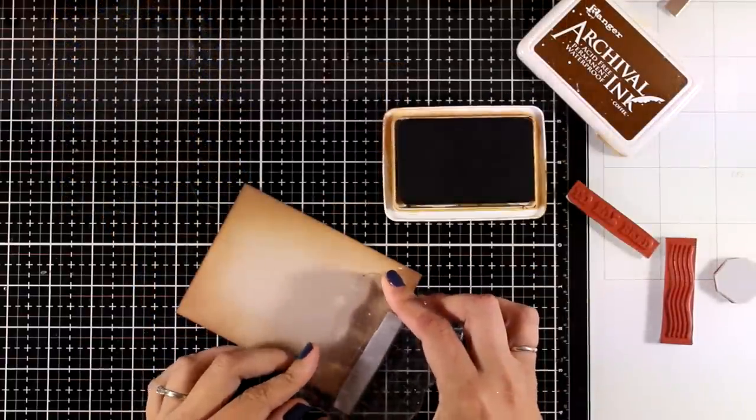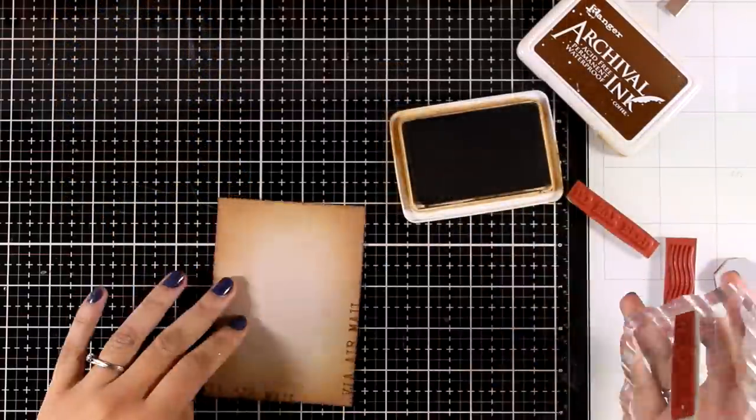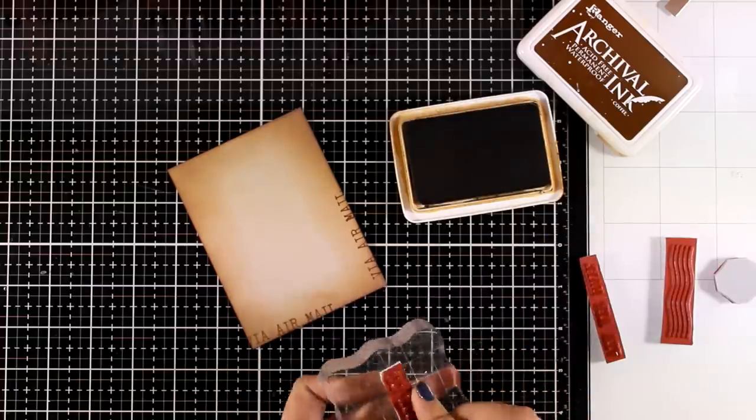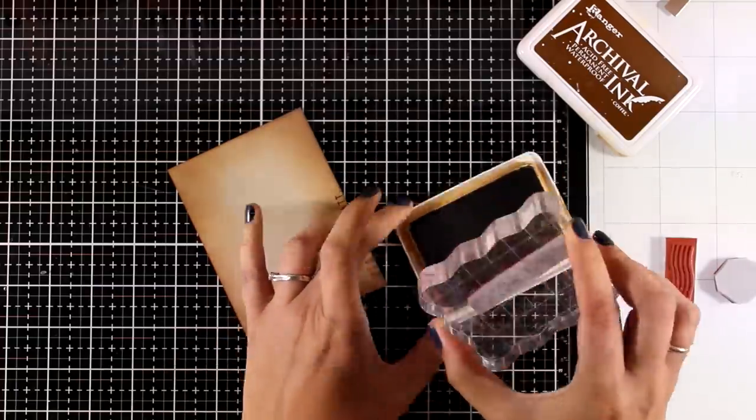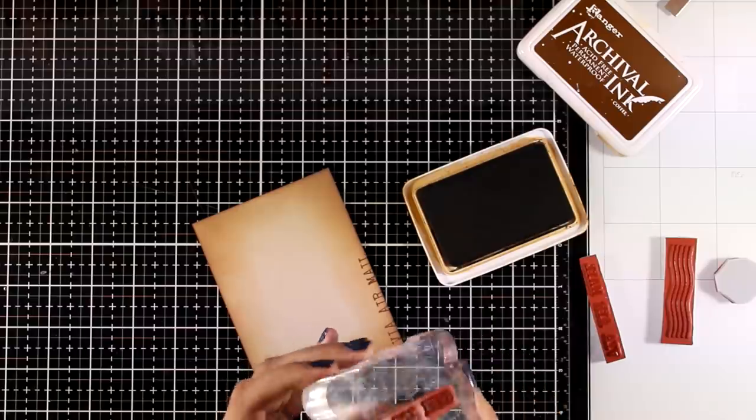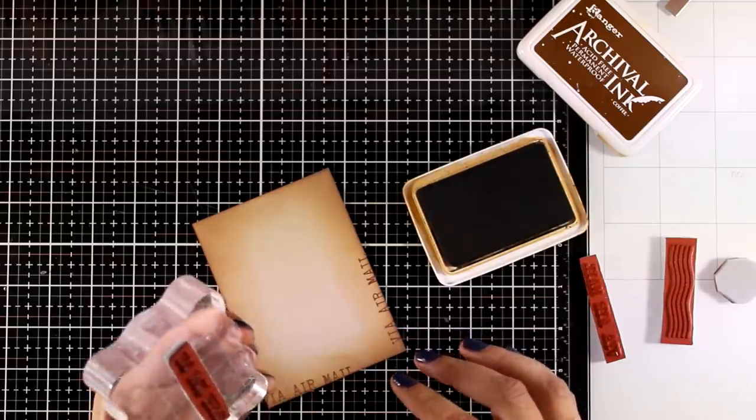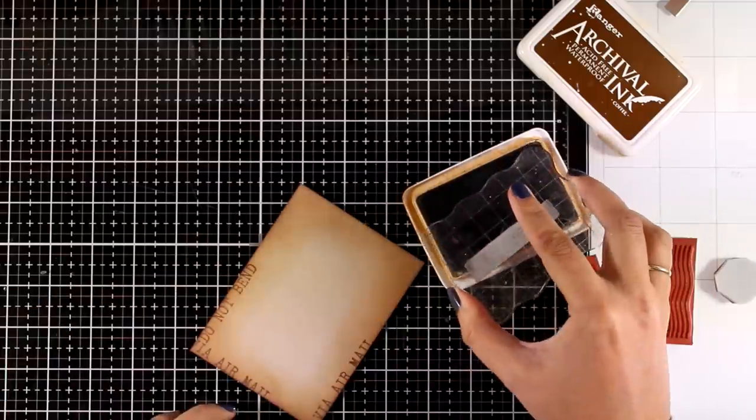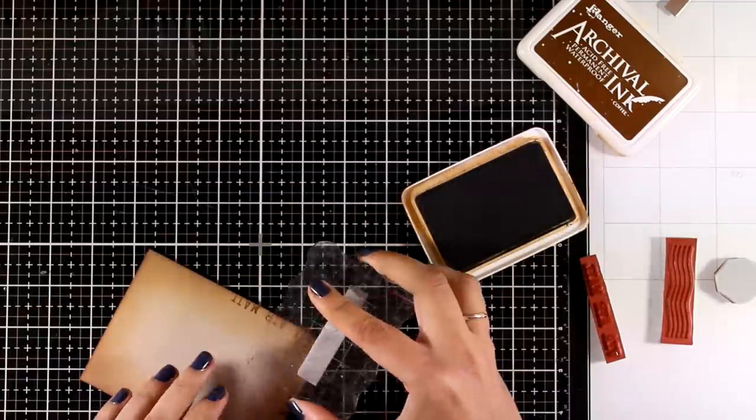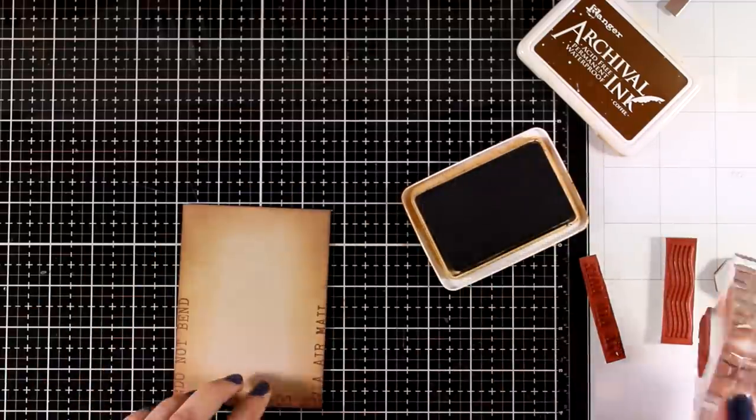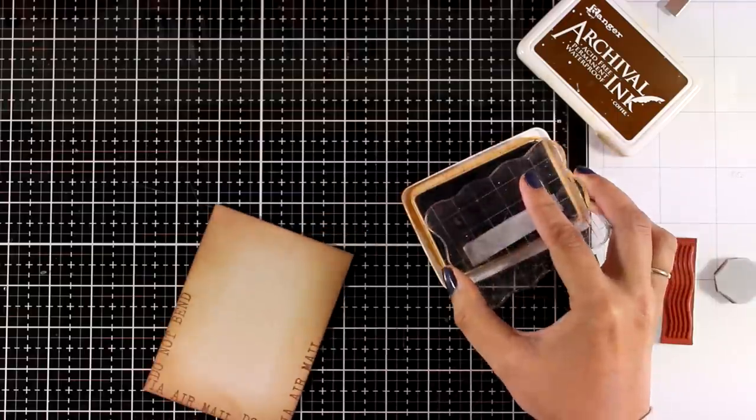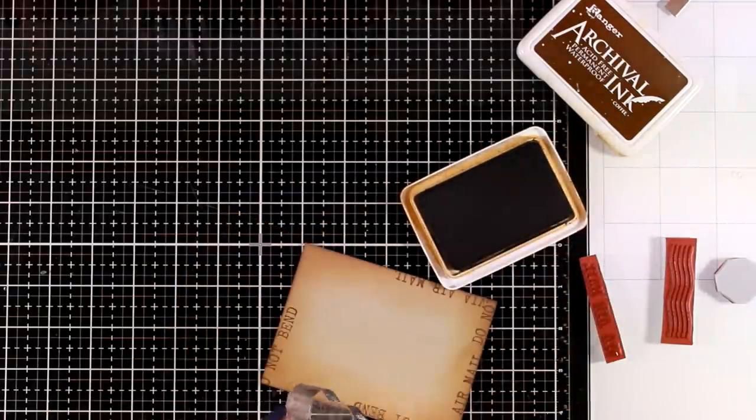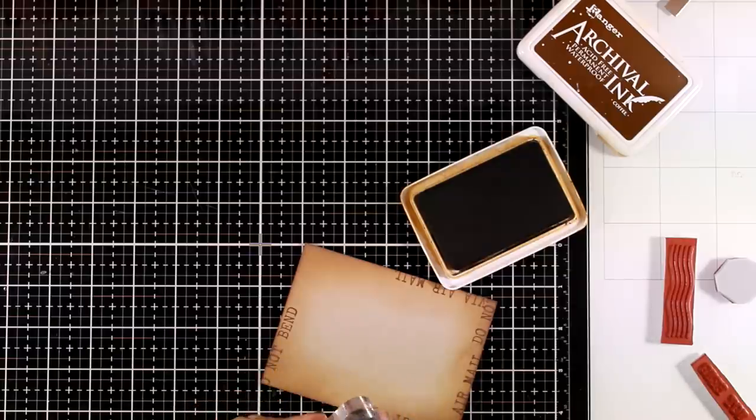Now I'm going to work on the edges of this panel. For that again I'm using my brown Archival ink and some of the stamps from the stamp set. I'm going all around stamping different phrases. And I'm not going for the perfect stamping here. I'm just turning around the panel and stamping with my brown ink just to have a nice frame. Which really adds to the finished look.